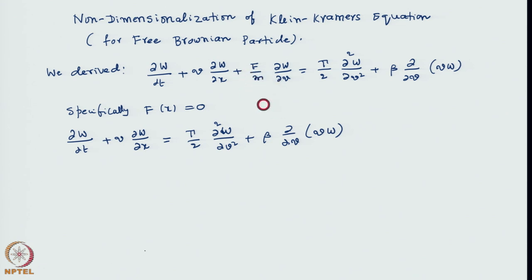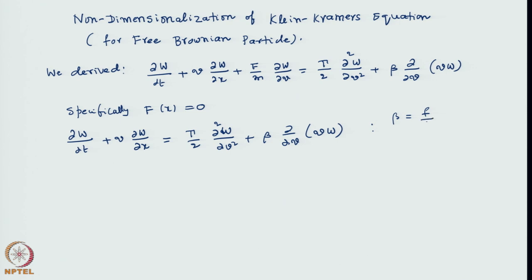Right now, we work with how we can make this equation look simpler. When we put force equal to 0, we have basically two parameters gamma and beta, and they are not all unrelated. We note that beta is F/M, and gamma equals 2 beta kT/M, where M is the mass of the particle, kT is the temperature, and F is the friction coefficient.